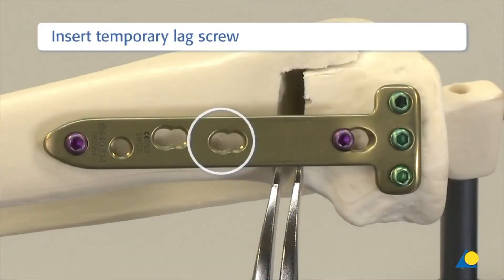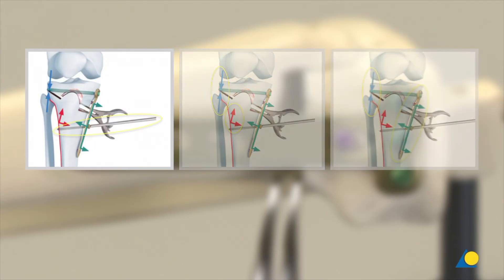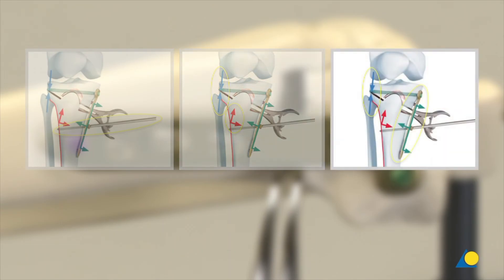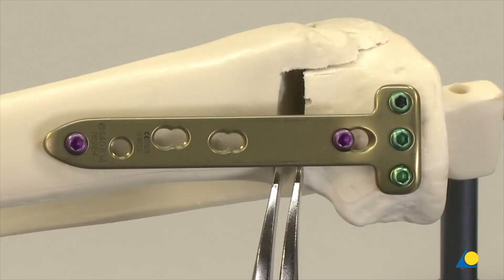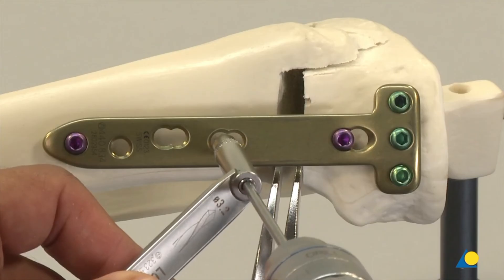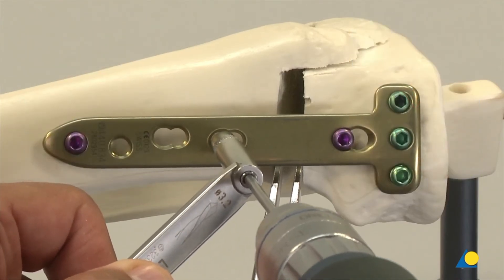A temporary lag screw is inserted into the first plate hole distal to the osteotomy, hole 1, in the neutral position of the dynamic part of the LCP hole. This lag screw, which is inserted intentionally at an angle and not perpendicular to the plate, creates a force vector which compresses the lateral hinge by pulling the distal osteotomy segment towards the plate, and also by forcing the plate into suspension, creating an elastic preload which will impose pressure upon the lateral hinge. Potential fissures within the lateral bone hinge are brought under elastic preload and distraction on the lateral side is eliminated. The hole is drilled with the 3.2 mm drill bit through the universal drill guide, angled slightly towards distal to create the force vector compression of the hinge, and also to ensure it will not interfere with the trajectory of the hole for the bicortical locking screw.